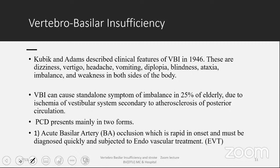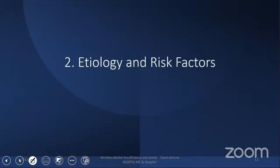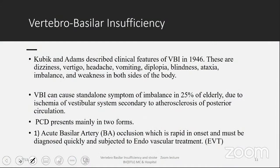Posterior circulation disease presents mainly in two forms: acute basilar artery occlusion — which is rapid in onset, must be diagnosed quickly, and is subject to endovascular treatment — and chronic vertebrobasilar insufficiency. Apart from that, there will be acute posterior circulation strokes giving rise to various syndromes like in the midbrain: Weber's, Claude's, Millard-Gubler syndrome, and Nothnagel's syndrome. All of them we are going to touch during this lecture.